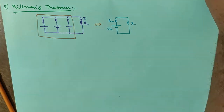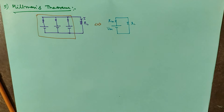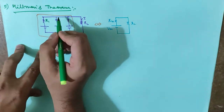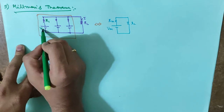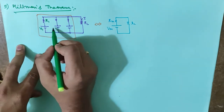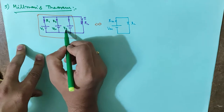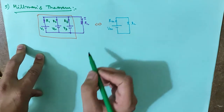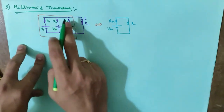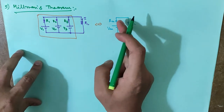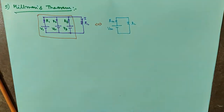Let us see how this will be solved. If the resistance is R1 and voltage is V1, this is V2 with R2, and this is V3 with R3, then how do we need to transform this circuit into Vm in series with Rm? This is very simple if we know source transformation.